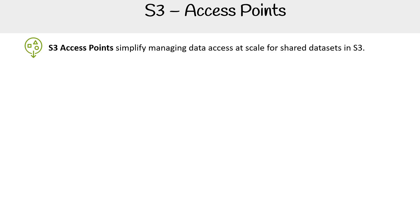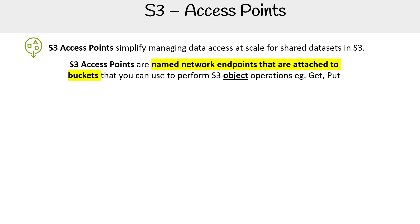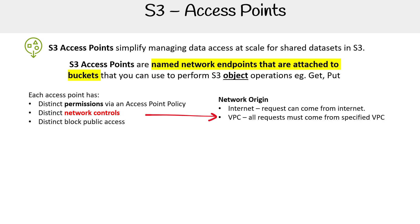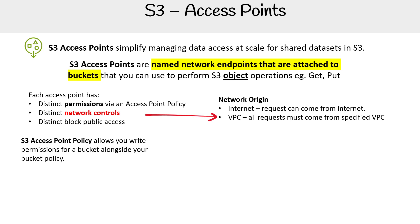S3 access points simplify managing data access at scale for shared data sets in S3. Access points are named network endpoints that are attached to buckets, which you can use to perform S3 object operations like GET and PUT. Each access point has distinct permissions via the access point policy, distinct network controls, distinct block public access settings, and you can access these endpoints two different ways: over the internet or through a specific VPC.